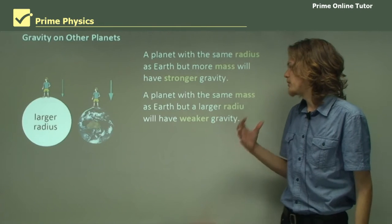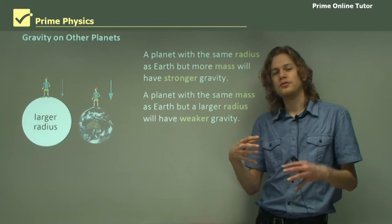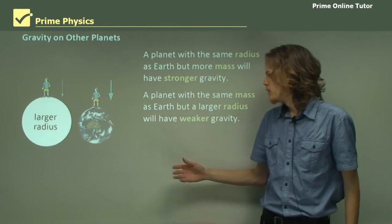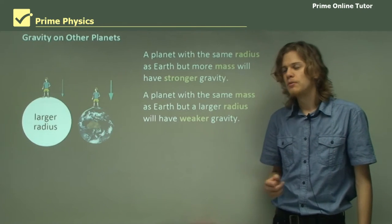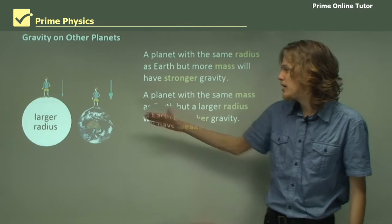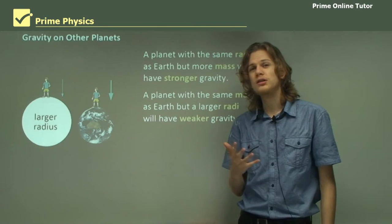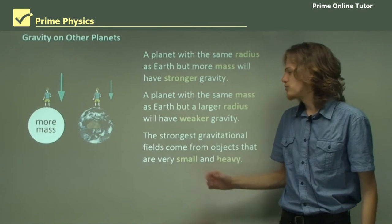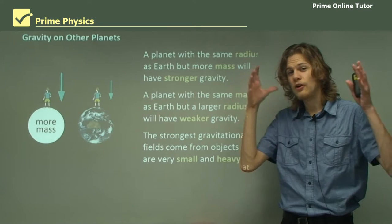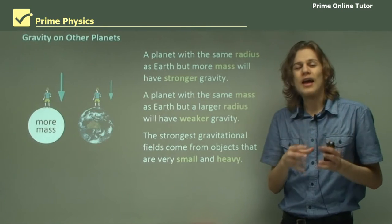A planet with the same mass but larger radius so a planet that's a lot less dense will have weaker gravity because in this case m2 is the same but the radius is increasing so the gravity decreases. It means that the strongest gravitational fields come from bodies that are very very small and very very heavy.